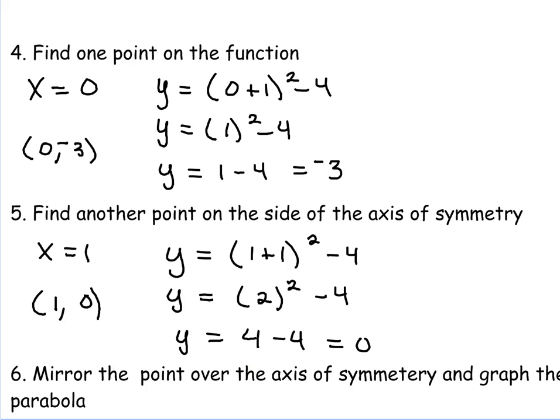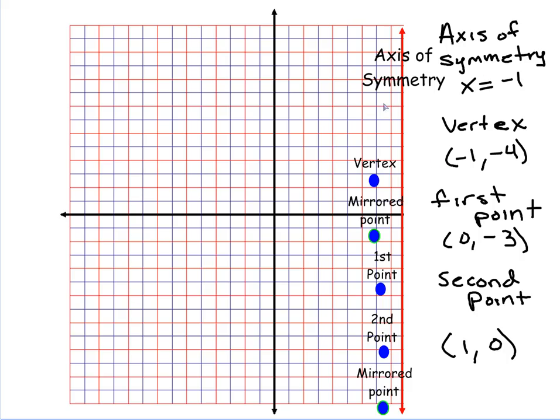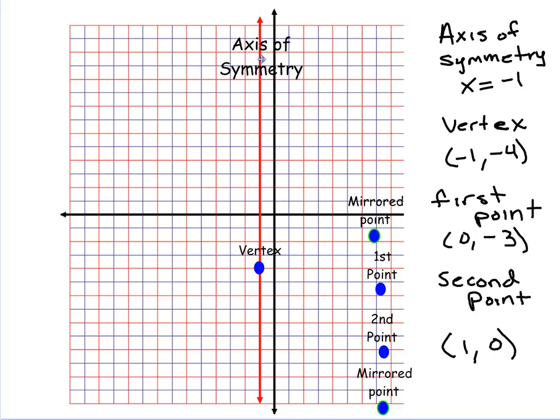Now we're going to, as we have our information, we're going to graph this information. After we graph it, we're going to actually mirror the points over. So the first thing I'm going to graph is my vertex, which is at negative 1, negative 4. So I'm going to go over to negative 1 and down negative 4. 1, 2, 3, 4. Then I'm going to put my axis of symmetry, right through that vertex. Next I'm going to graph is my first point, which in this case is 0, negative 3. So that's right there. Then I'm going to graph my second point, which in this case is 1, 0. Which also happens to be my X intercept. My first point actually happened to be my Y intercept.